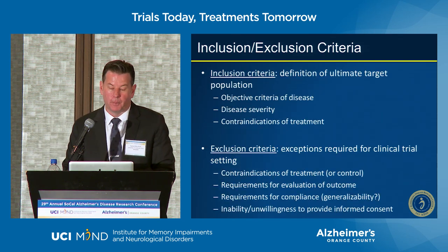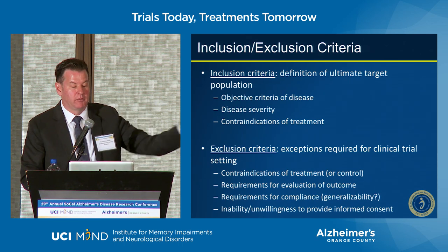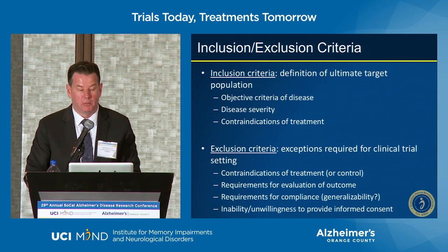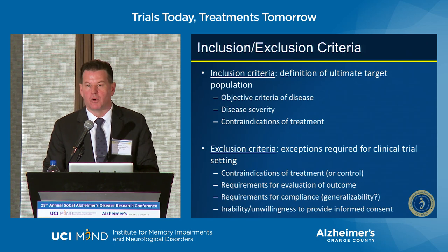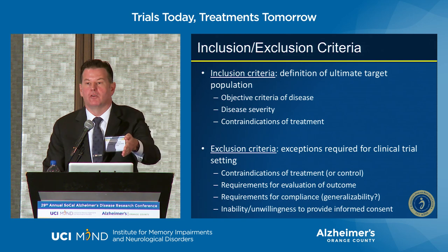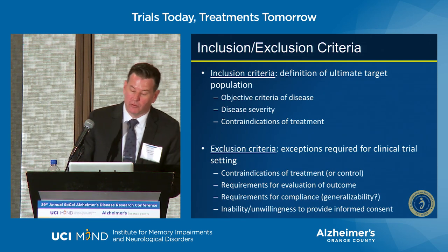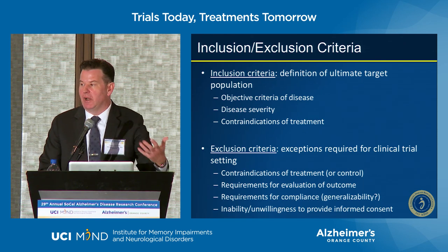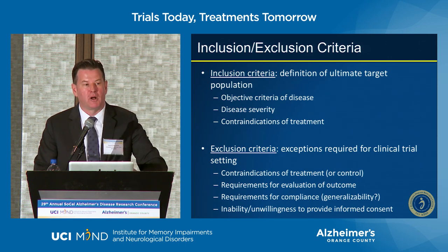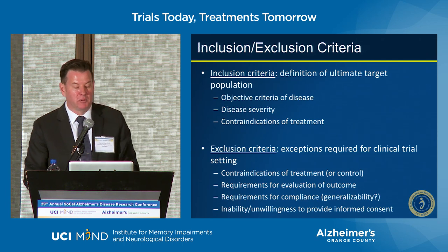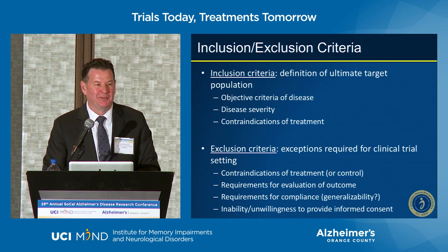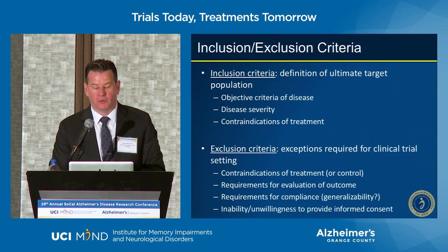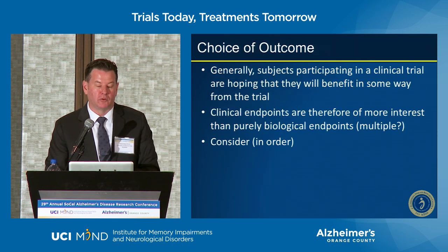Inclusion criteria should include objective criteria of disease, disease severity, and contraindications for treatment. Exclusion criteria should cover contraindications and requirements for evaluation of the outcome — if we cannot assess the outcome on an individual, they should not be included because we can't gain information on the outcome of interest. Requirements for compliance must be considered carefully, but you can't just take perfect compliers because that's not who's in the general population. Individuals unwilling to provide informed consent meet the exclusion criteria for any study.